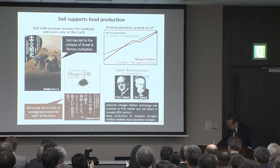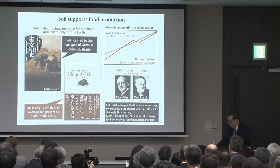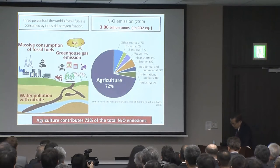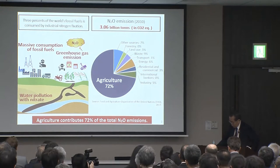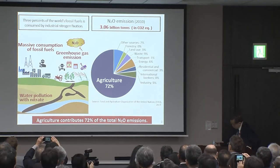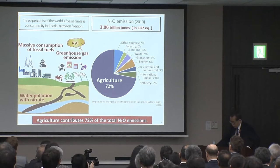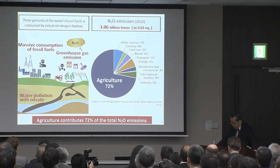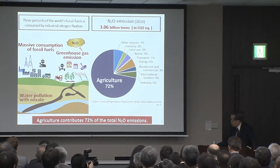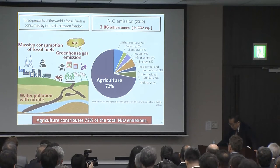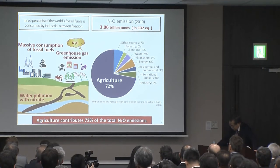However, large amounts of nitrogen fertilizer have been applied to the soil, which has detrimental effects on the environment. Nowadays, the amount of industrial nitrogen fixation based on the Haber-Bosch process is comparable to biological nitrogen fixation. Three percent of the world's fossil fuel is consumed by industrial nitrogen fixation. Nitrogen fertilizers applied to agricultural land cause environmental pollution, such as nitrate reaching groundwater and enhancement of nitrous oxide gas emission from soil.